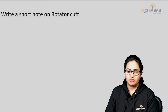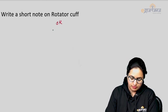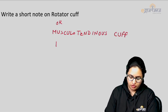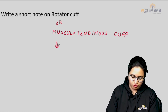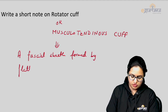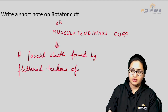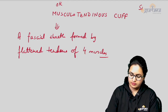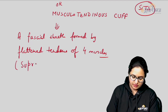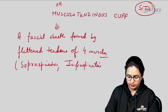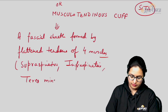Rotator cuff, also known as the musculotendinous cuff, is a very commonly asked short note topic. The characteristic feature of this rotator cuff is that it is formed by the flattened tendons of four muscles. For those four muscles we use the mnemonic SITS: supraspinatus, infraspinatus, teres minor, and subscapularis.